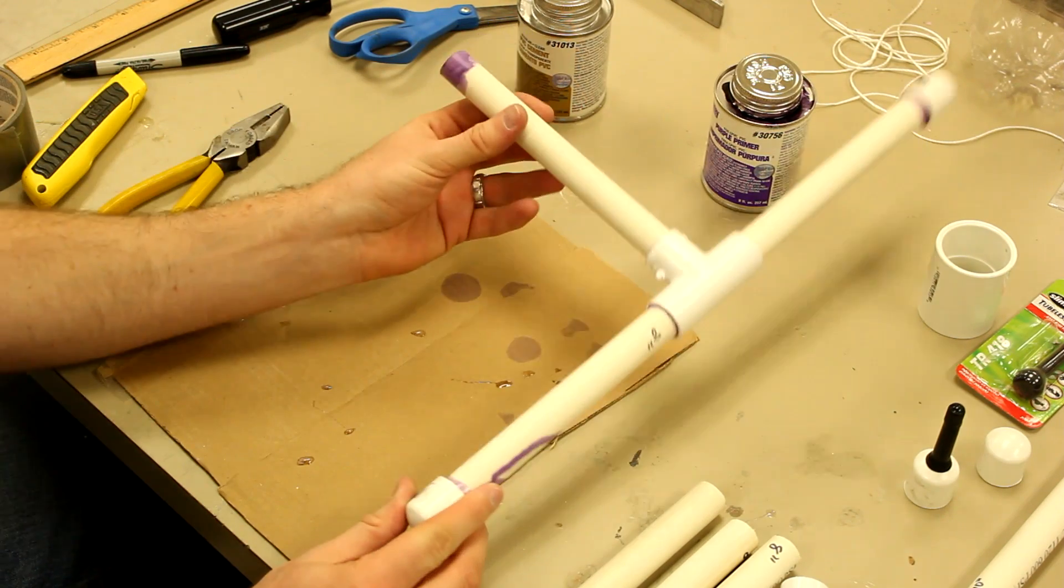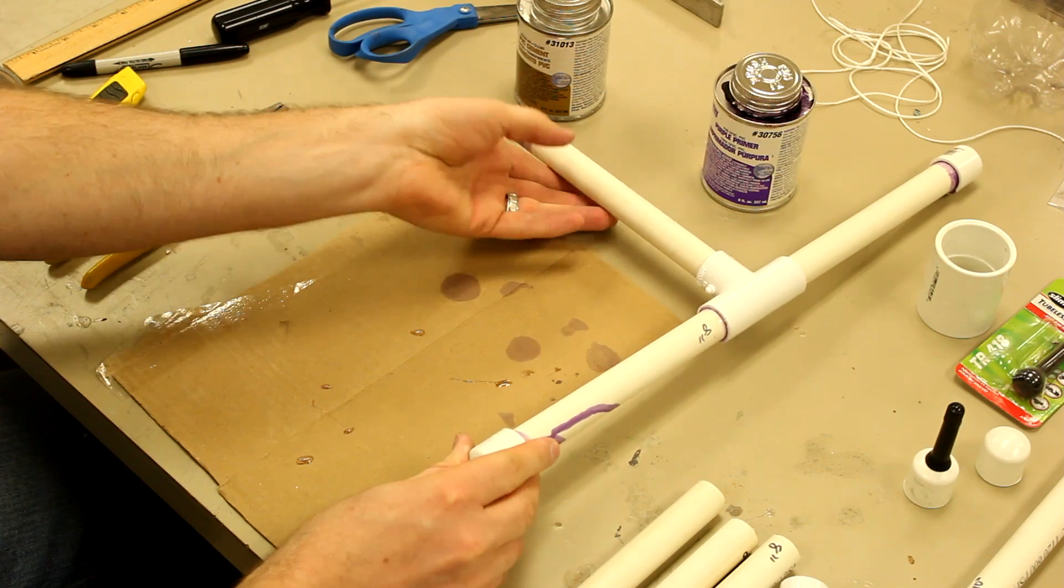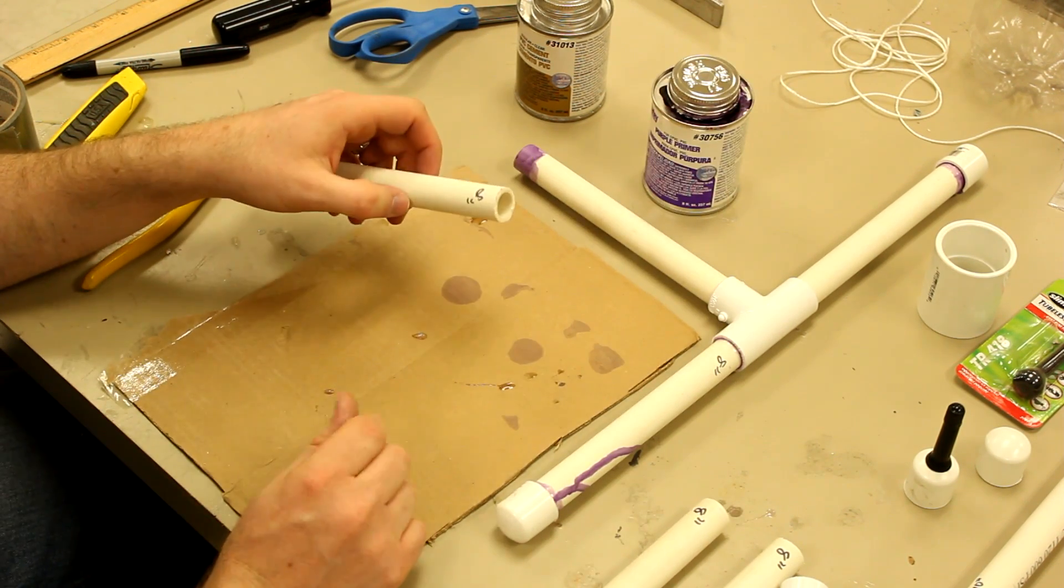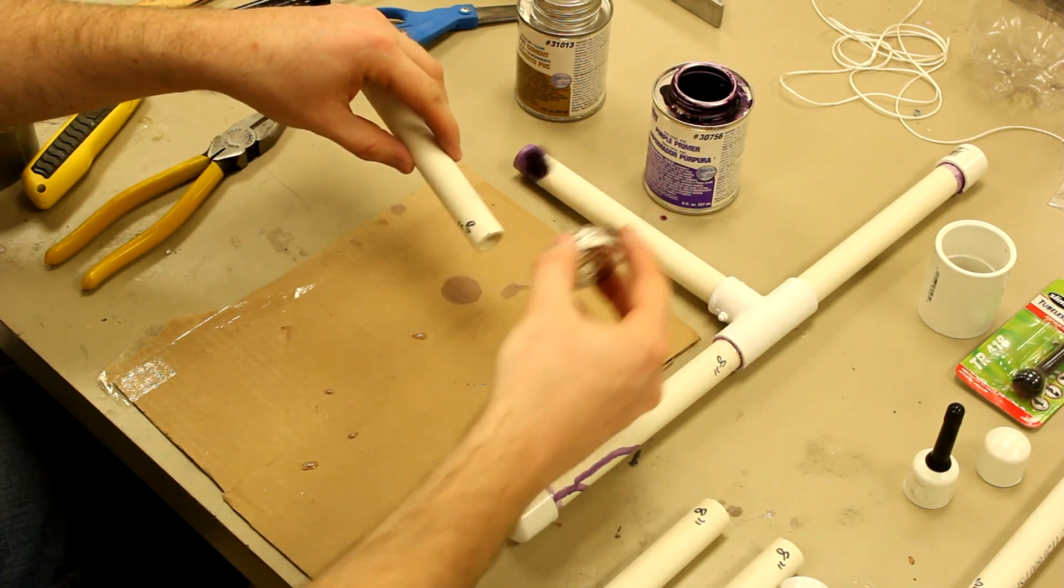This is what we'll be building next. This is half of the base of your launcher. I'm going to show you how to build one real quick. If you've never used PVC cement before, basically what you do is put just a little bit of this purple primer on here.